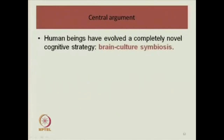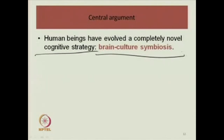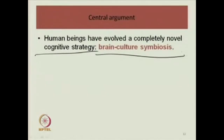The central argument in Donald's text is this — and that is why we need it for cultural studies: human beings have evolved a completely novel cognitive strategy compared to other animals, and this strategy is our brain-culture symbiosis. We have a whole theory of co-evolution where the physical feeds into the cultural and the cultural feeds into the physical. This strategy was developed singularly by homo sapiens. So we have a brain-culture symbiosis, meaning the physical and cultural evolved together, and that is why we need to know this narrative.